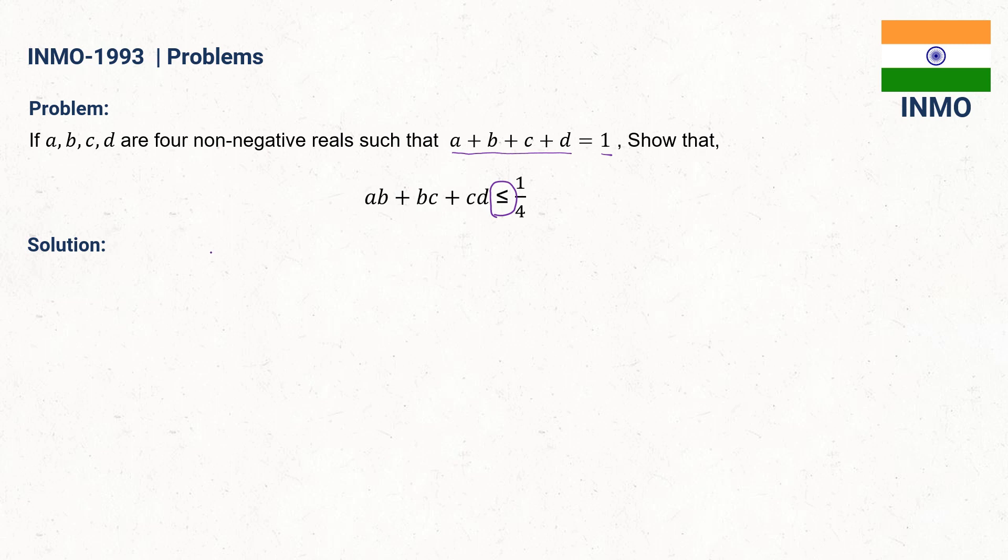And if we observe carefully the expression AB plus BC plus CD less than or equal to 1 by 4, we can understand that A multiplied by B plus B multiplied by C plus C multiplied by D. We can write this as B into A plus C plus CD.